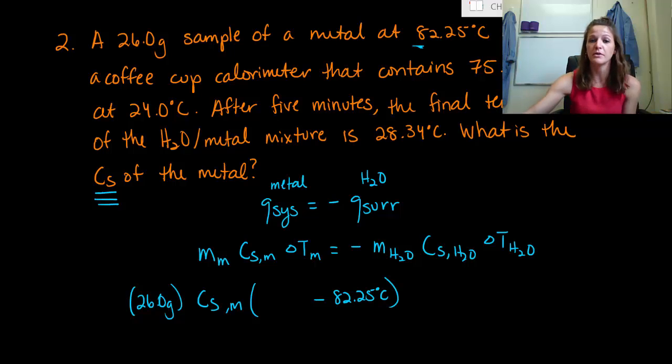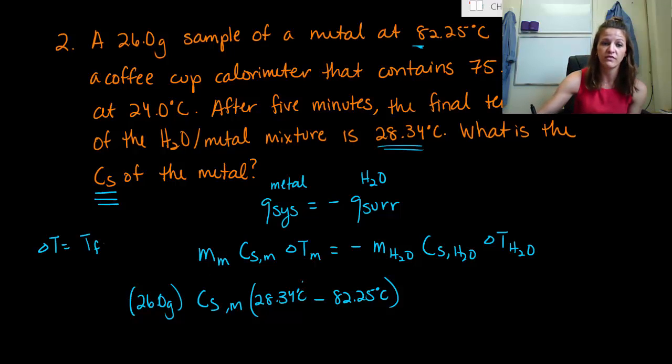Now our final temperature, that's what our mixture is here, the water metal mixture, that's our final temperature. So that's going to be our 28.34 degrees Celsius. So just remember, your change of temperature is always your final temperature minus your initial temperature. You cannot mess that up. I almost did, you saw me writing that out. So you just have to make sure you're so meticulous and be super careful when you do this. So final temperature was 28, your initial temperature was your 82.